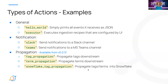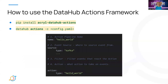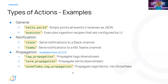Lastly, you have to configure the type of the action, which tells it what actions to take on events. There are some actions we already provide. For example, Hello World — if you configure Hello World, it'll simply print all events it receives as JSON. And if you configure Slack as a type of action, it'll send notifications to the Slack channel you already configured. We also support propagation from version 0.0.13, which lets you propagate tags, terms, and on Snowflake.